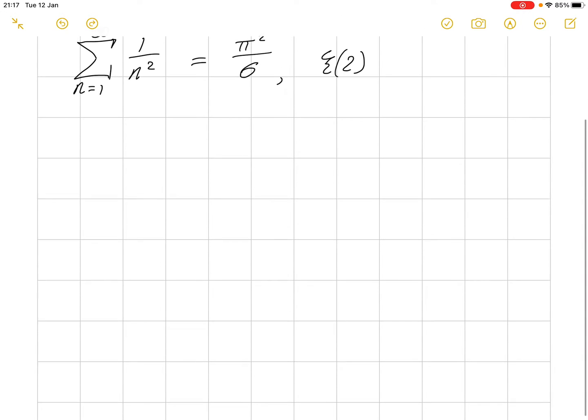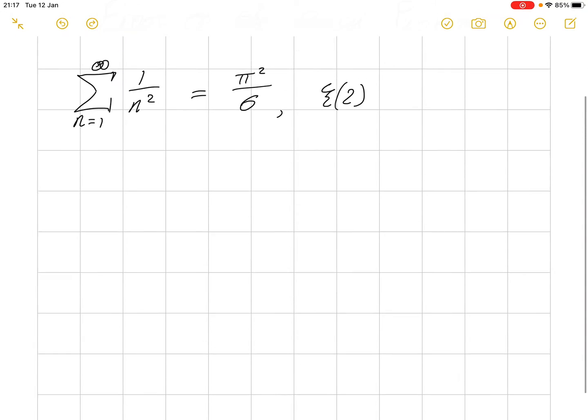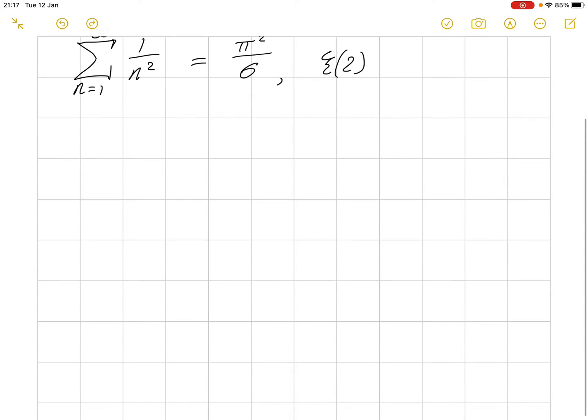So, how do we go about proving this almost magical conjecture? Well, we begin by considering sin of x. We've seen it 100 times before. And we're going to consider its Maclaurin expansion.